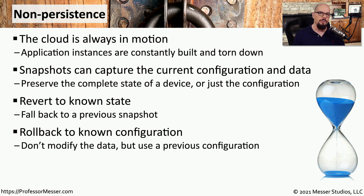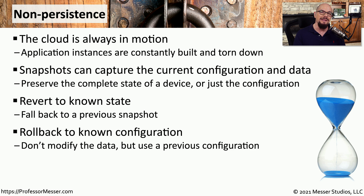We can also separate out the data from the configurations. If we make a change to this instance and we realize that the data is OK but the configuration needs to be modified, we could roll back the configuration of the application but leave all of the data in place. Based on the way the application is written, we may have many options available for reverting back to previous snapshots.